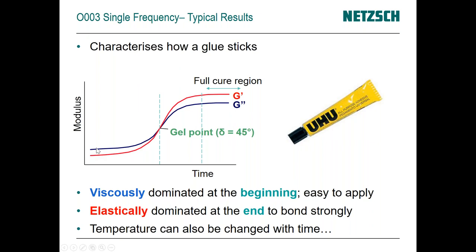We can define our sampling intervals — how often we take a data point. For something like an epoxy or glue, the material starts out more viscous and flows easily. Over time at isothermal conditions you'll see it go through a transition and become more elastic until reaching a full cure region. This also gives you a measure of how high a modulus it ends up — a measure of its strength or stiffness. Understanding the low-modulus characteristics tells you whether the material will flow more than you need before curing.